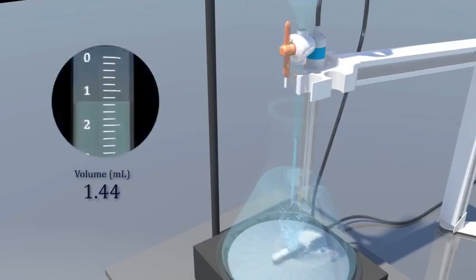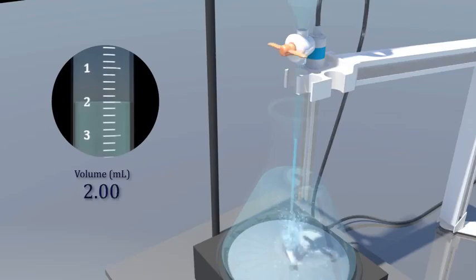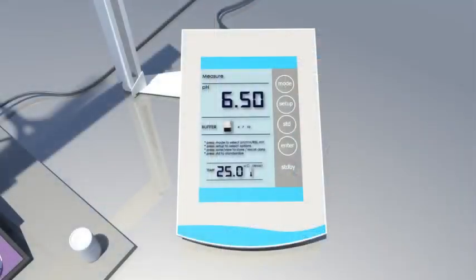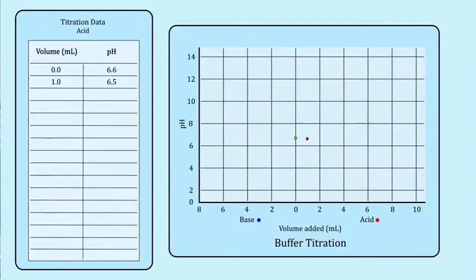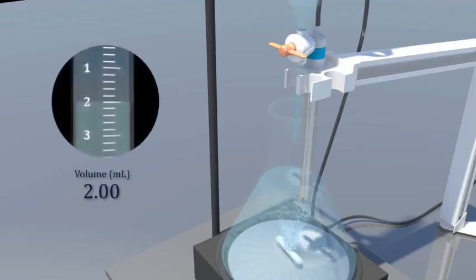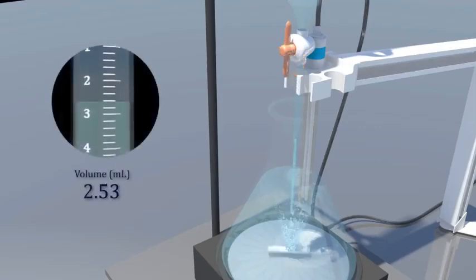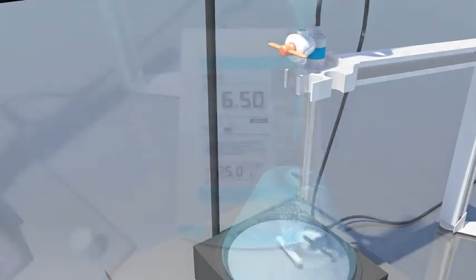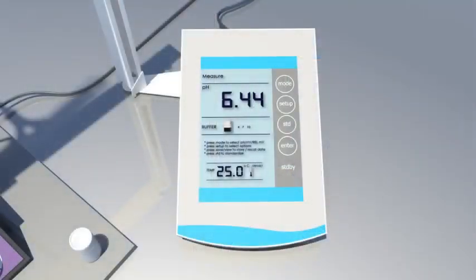Now we add another milliliter of acid, and let's see how much the pH decreases. So it didn't really decrease at all, so we must still be within our range at which our buffer is working. So now we're going to add a third milliliter of the acid. See how it changes the pH. Now our pH is starting to change a little bit more significantly, so we've gone to 6.4, we dropped another 0.1.